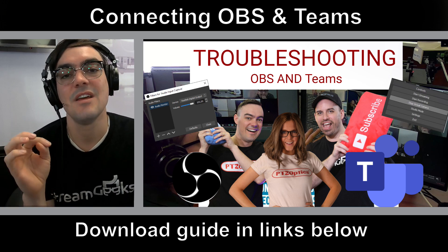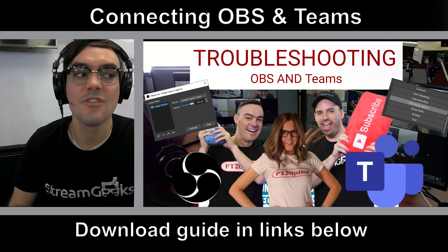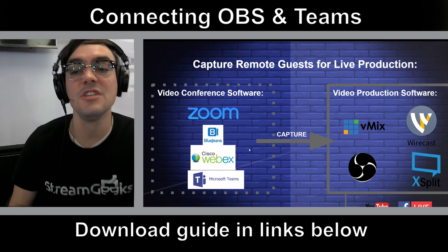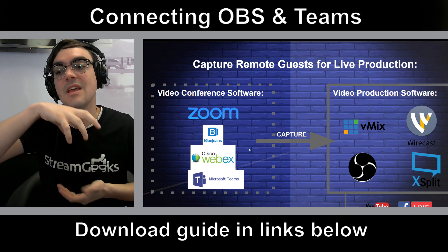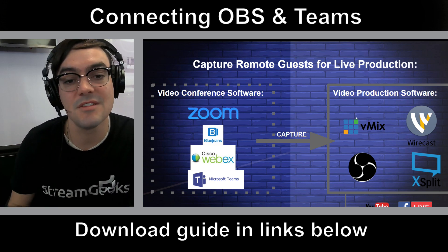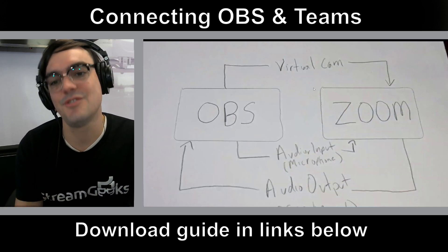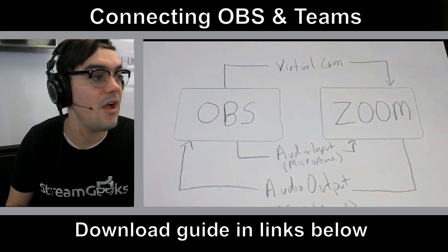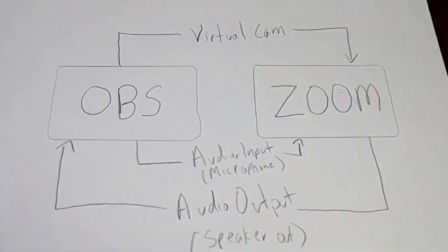I have a troubleshooting video originally made for connecting OBS and Zoom, but it's basically the same troubleshooting process — so if you have issues, check that video first. Essentially what we're doing is using a video conference software — Microsoft Teams — and a video production software — OBS. This also works with vMix or Wirecast. In this diagram, you've got a virtual camera connecting OBS to Teams. For the complete integration, you'd add an audio input from OBS into Teams and an audio output from Teams into OBS.